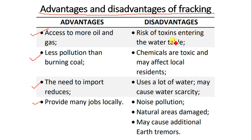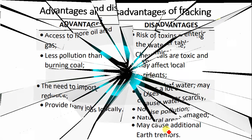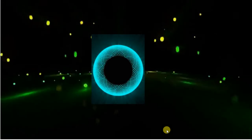The disadvantages of fracking include risks of toxins entering the water table, toxic chemicals that may affect local residents, high water usage that may cause water scarcity, noise pollution from the machines used, damage to natural areas when clearing vegetation for exploration, and potential additional earth tremors from sending chemicals at high pressure into the earth's crust.